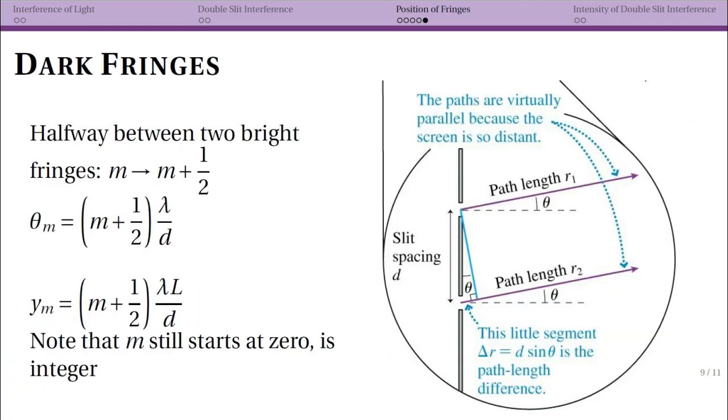Up till now, we've been talking about the location and the spacing of our bright fringes. We can also talk about our dark fringes. Really, the only difference in our math is that when we think about the path segment here, instead of wanting the path length difference to be an integer number of wavelengths, it can be an integer and a half number of wavelengths, meaning that you have destructive interference. All we have to do is take our previous equations and take m, which was an integer, and instead make it m plus one half.